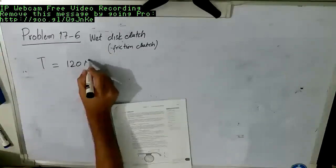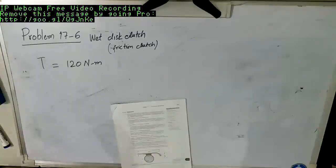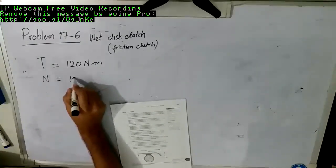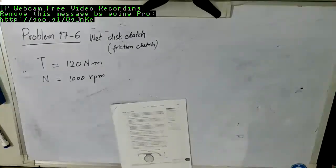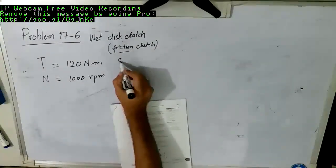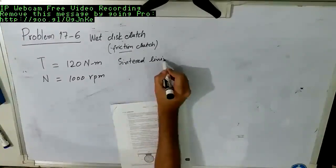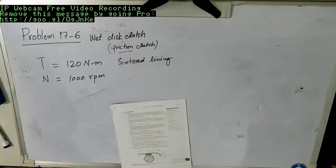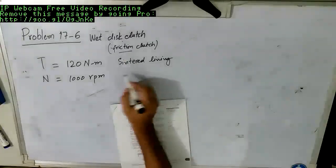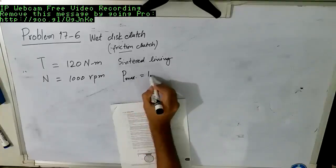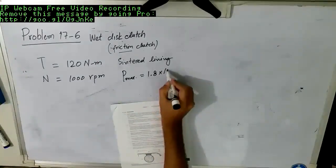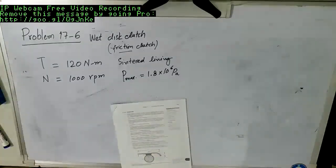How many surfaces are needed to transmit 120 Newton meter of torque at a speed of 1000 rpm? Further, it tells the type of lining. The friction lining is sintered lining and then it says it has a maximum pressure of 1.8 megapascal.